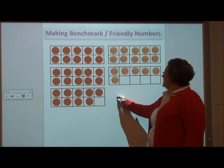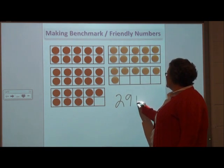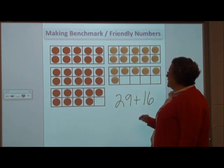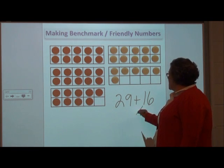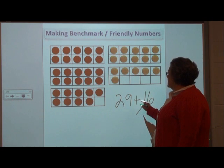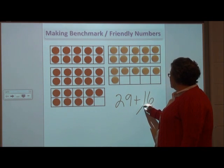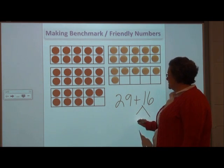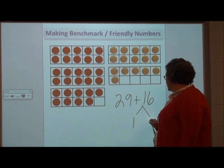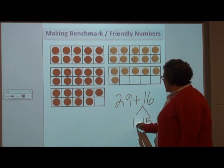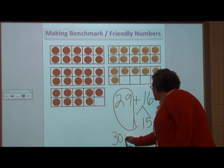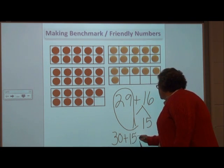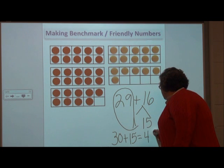If I have 29 plus 16, I know that if I add one more to 29, I will get 30. So I can decompose 16 into 1 and 15, and now I have 30 plus 15 equals 45.